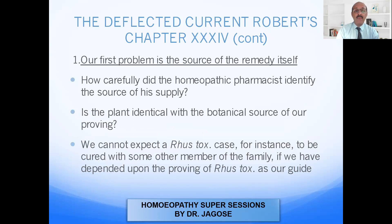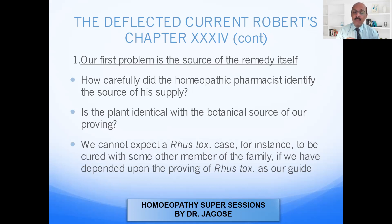Our first problem is the source of the remedy itself. How carefully did the homeopathic pharmacist identify the source of his supply? The pharmacist should have carefully identified whether the source is genuine and reliable. If the source is not genuine or not reliable, then whatever symptoms are produced when you prove the drug on a healthy human being, it will not be of use — it will be an obstacle.